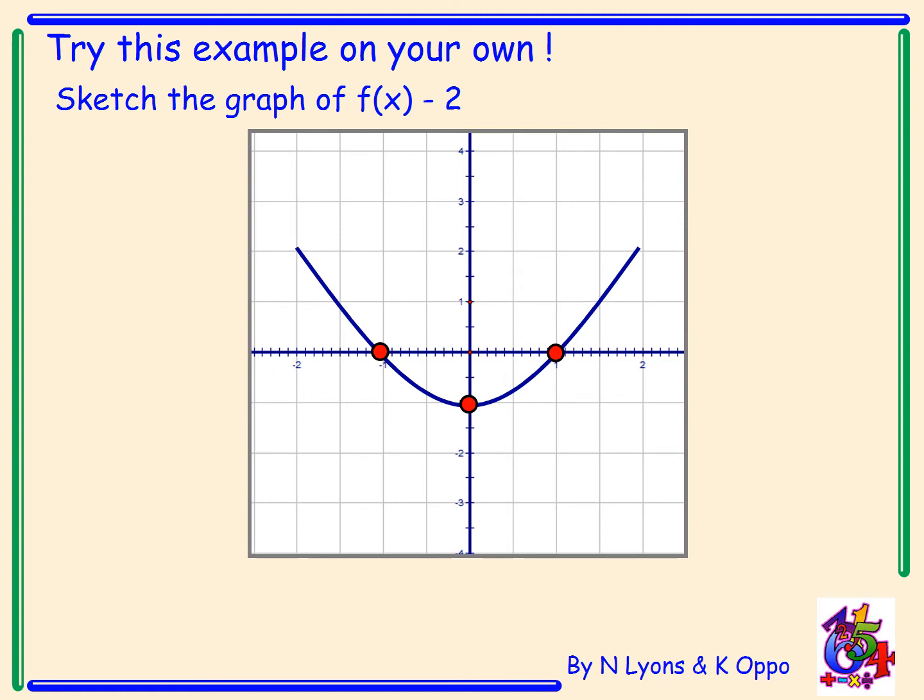Now try this example on your own. Please pause the video. And the answer: the graph of f(x) - 2 moves everything vertically down two places. And our three new coordinate points are A(-1, -2), B(1, -2), and C(0, -3).